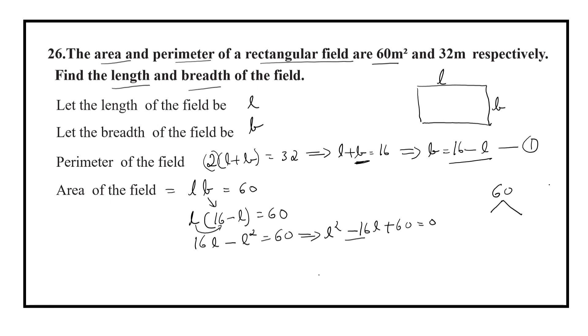Now factorize 60 to get minus 16. Minus 10 minus 6 is equal to minus 16. Now you can write the equation as L minus 10 into L minus 6 is equal to 0. So L is equal to 10 or L is equal to 6.